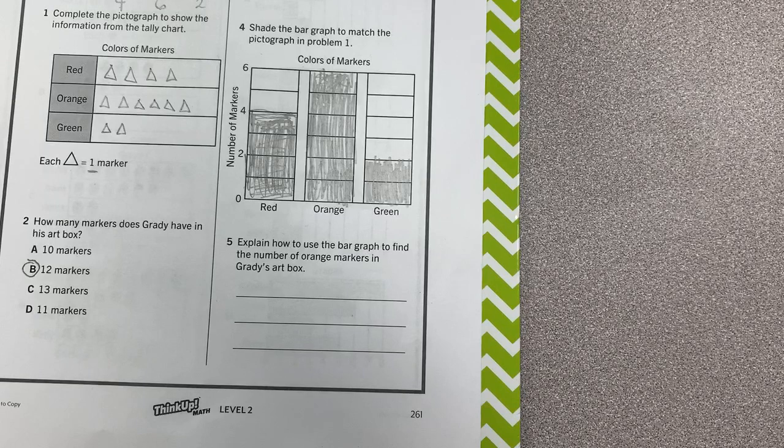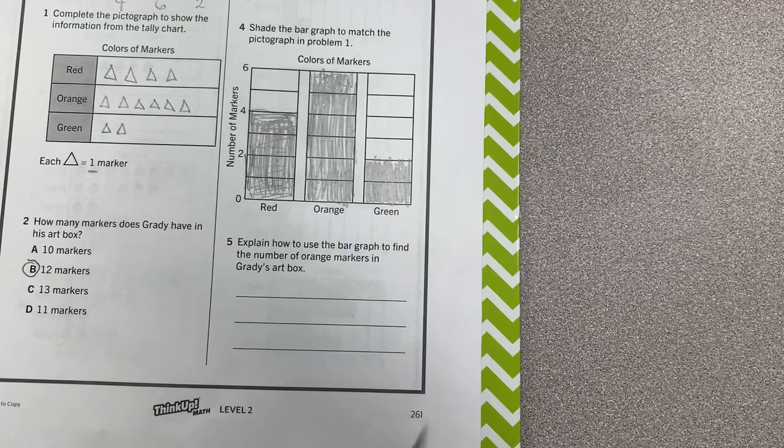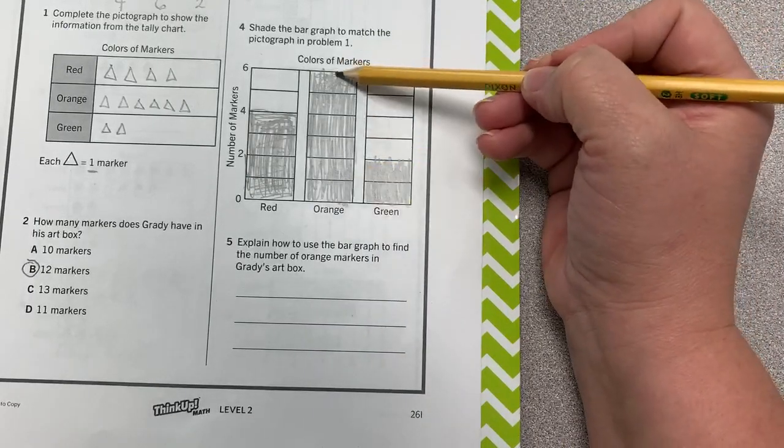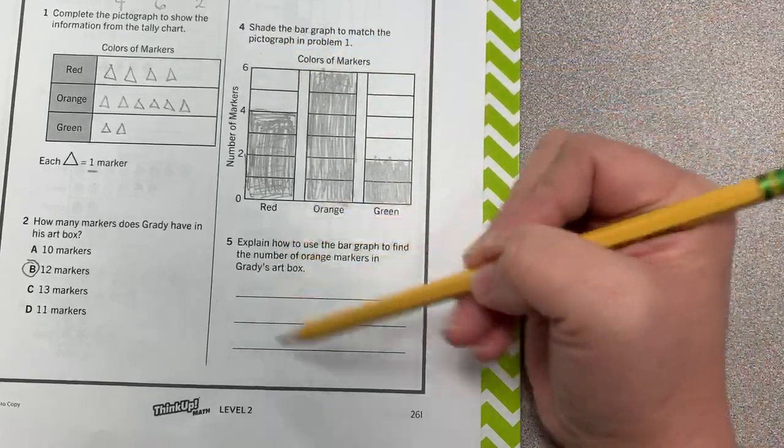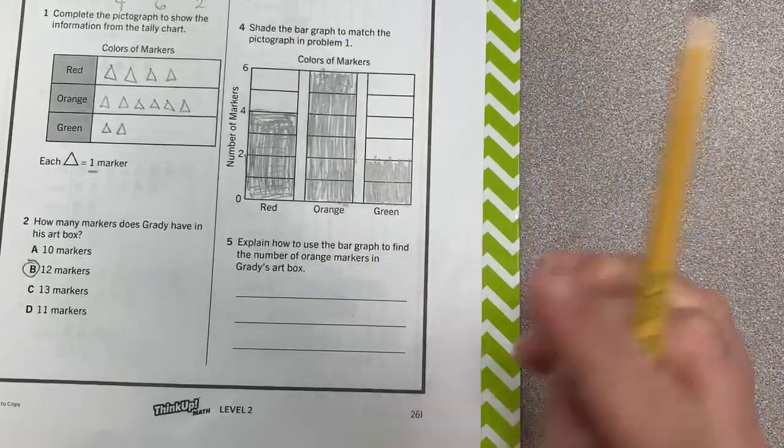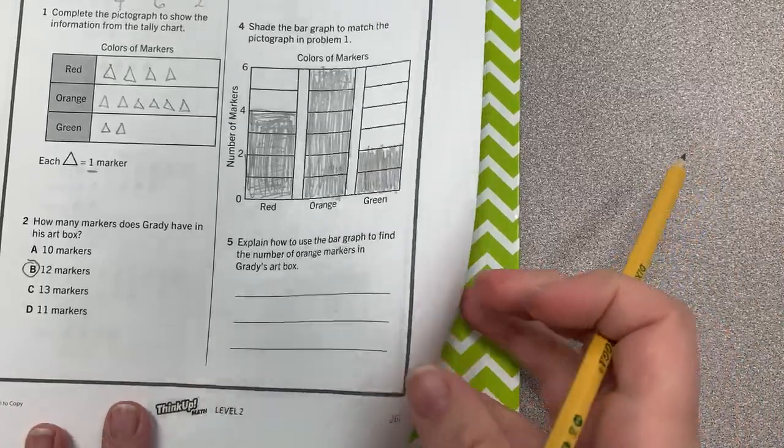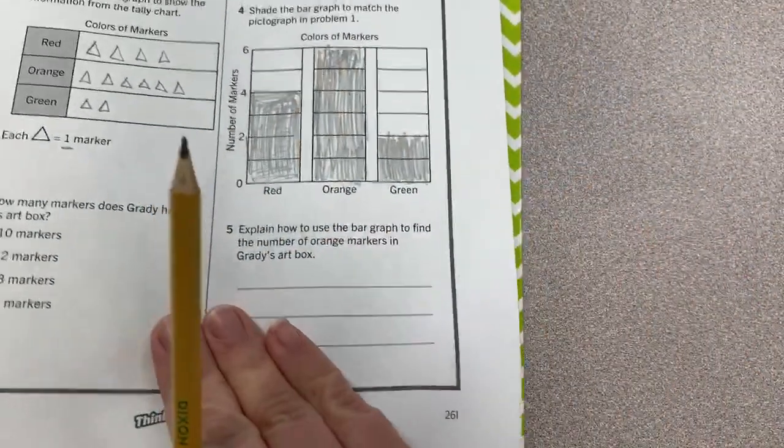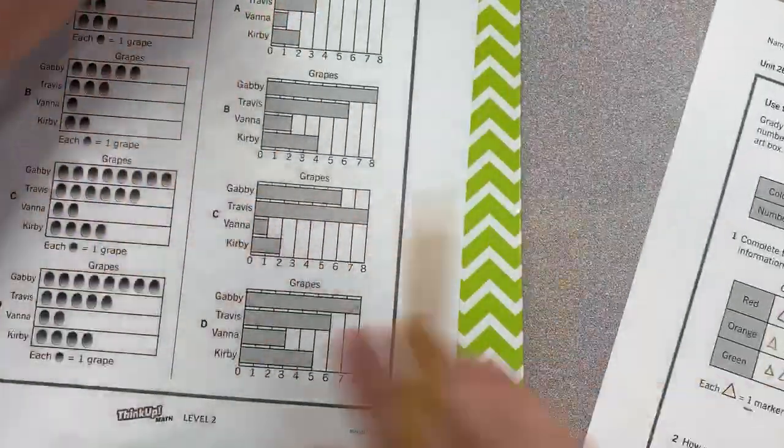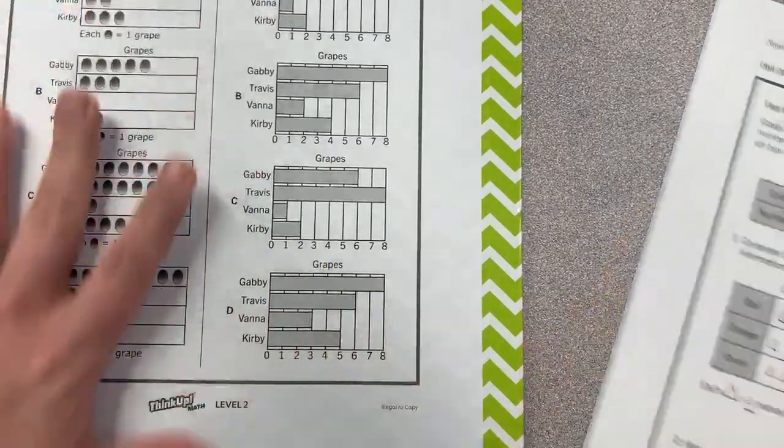Number five. Explain how to use the bar graph to find the number of orange markers in Grady's art box. Well, you could say that you counted up to six, that you followed the line and then went over to match the number. I want to see what you're going to write on that. Okay. Now we're going to do our next page. So turn the page to 262.